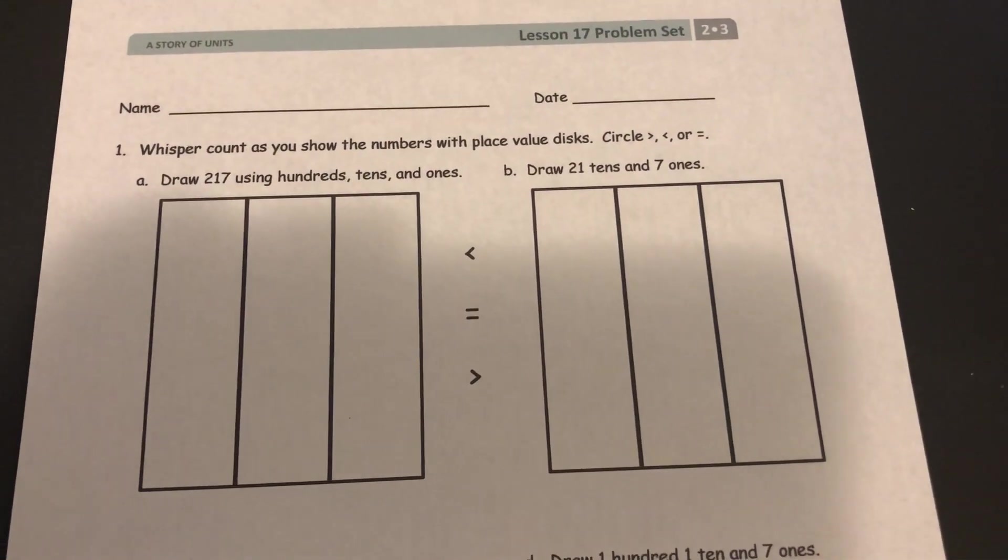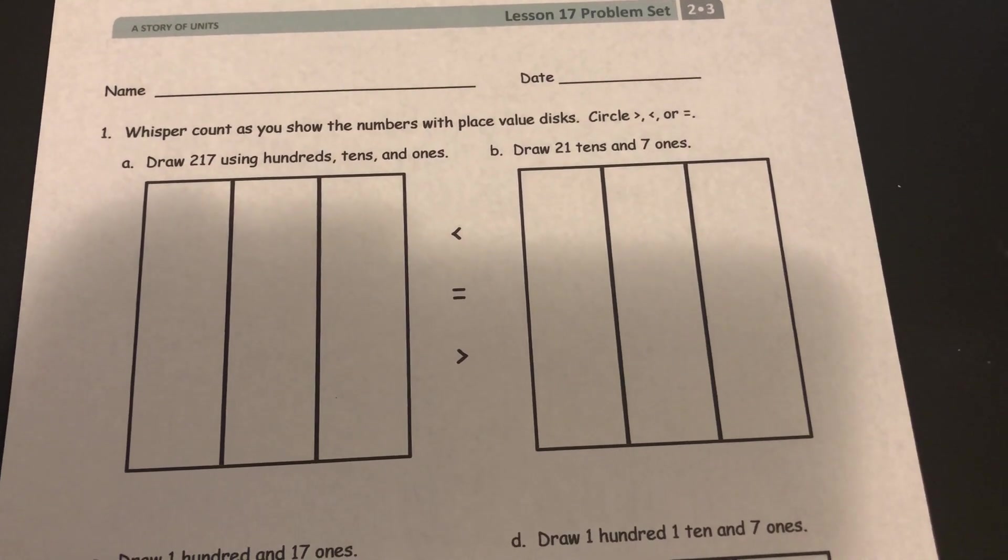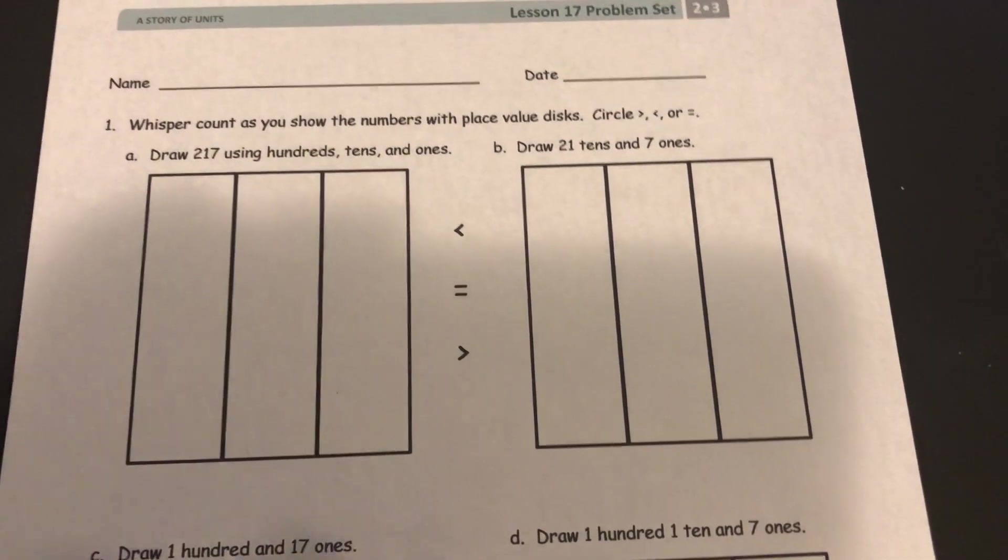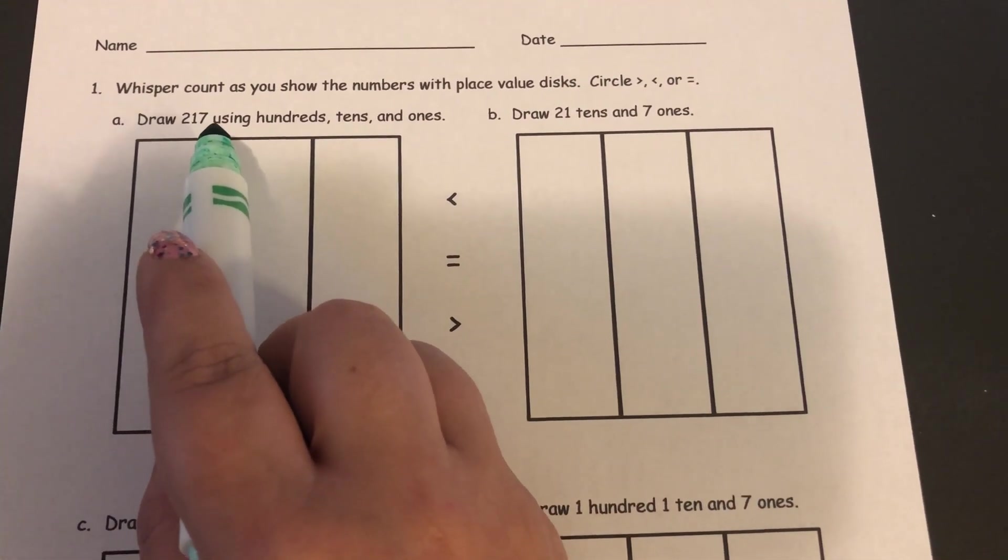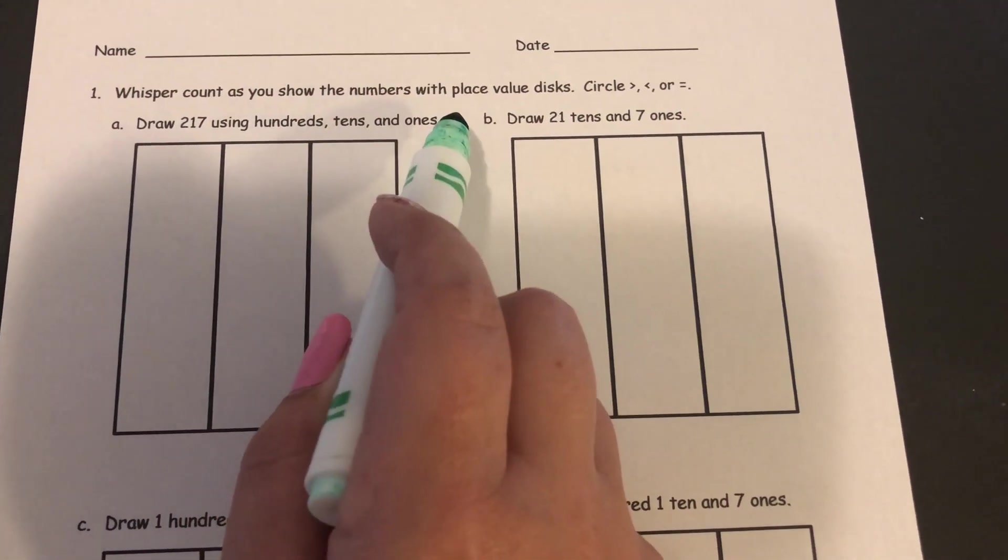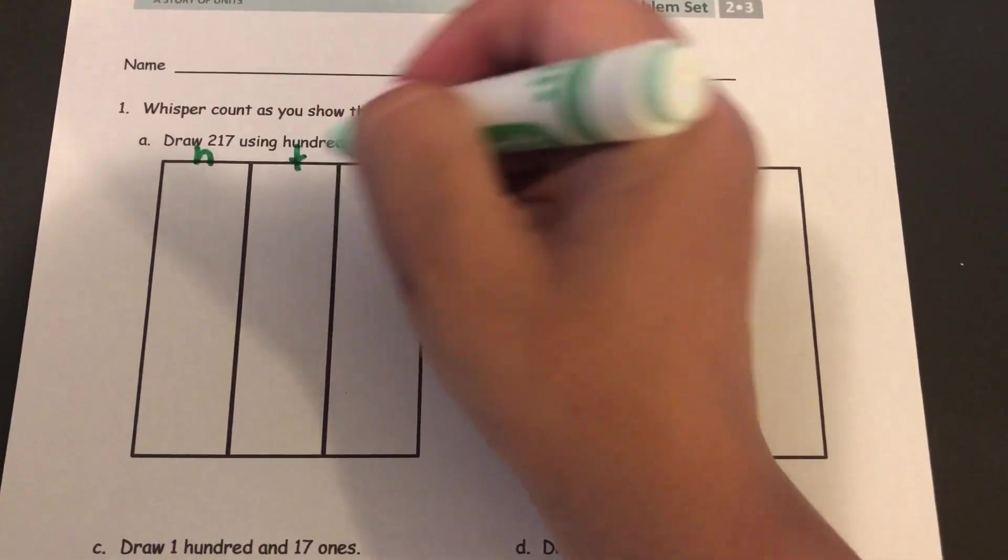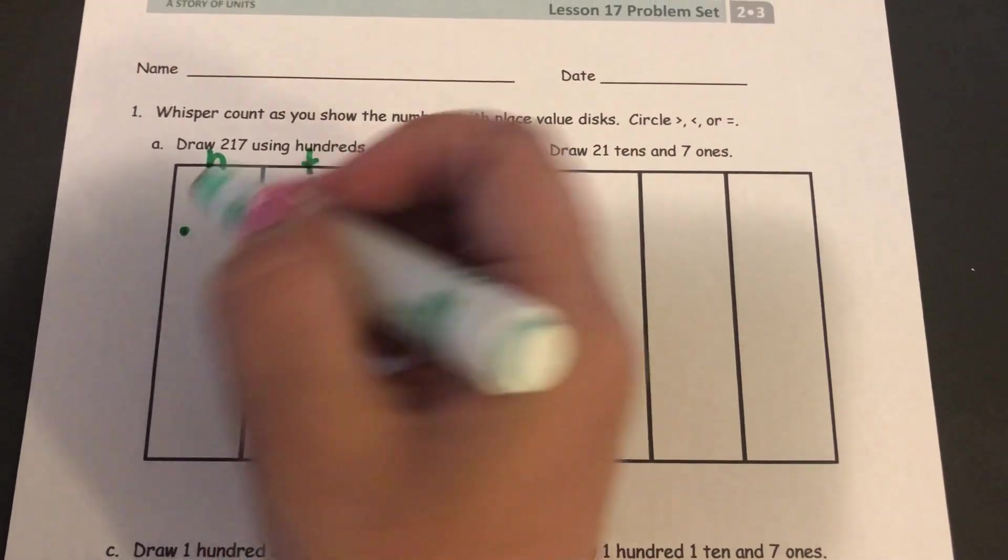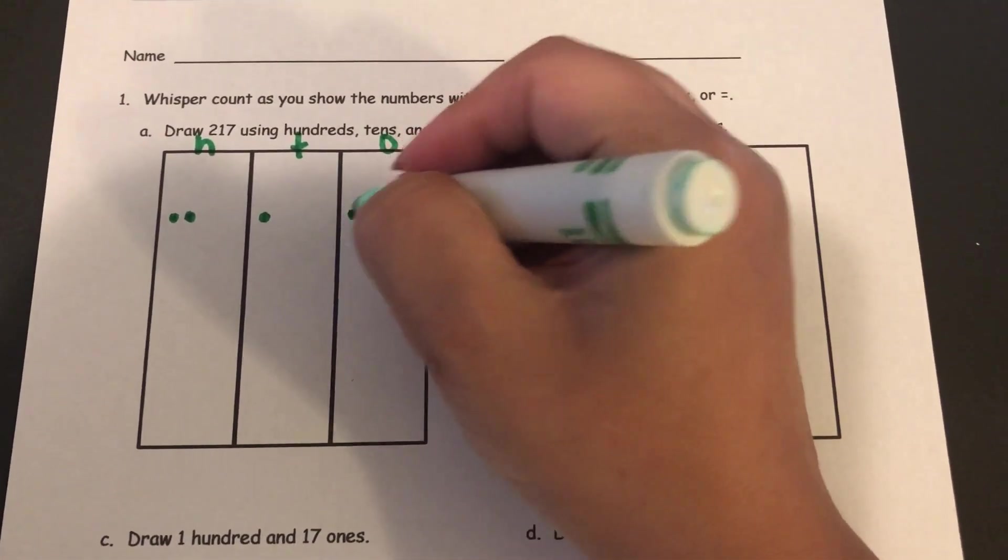So in the first section it says to whisper count as you show the numbers with place value disks and then to circle the correct symbol. All right, so draw 217 using hundreds, tens, ones. So 217, if I am labeling my place values H for hundreds, T for tens, O for ones, it would have two hundreds, one ten, and seven ones.